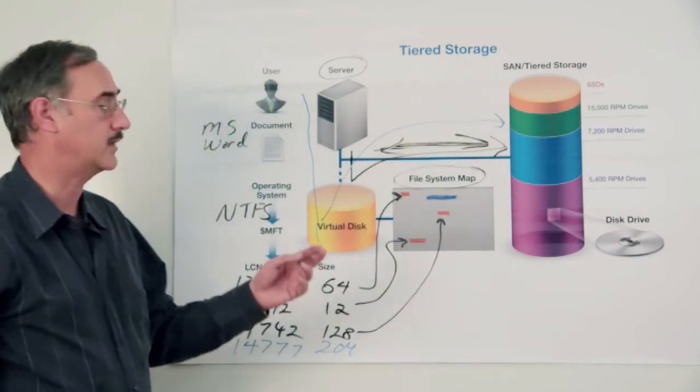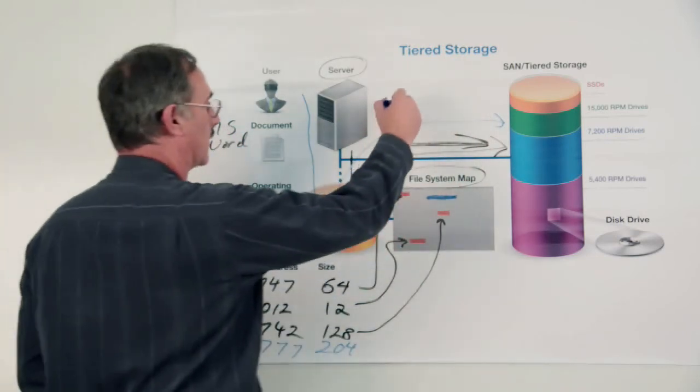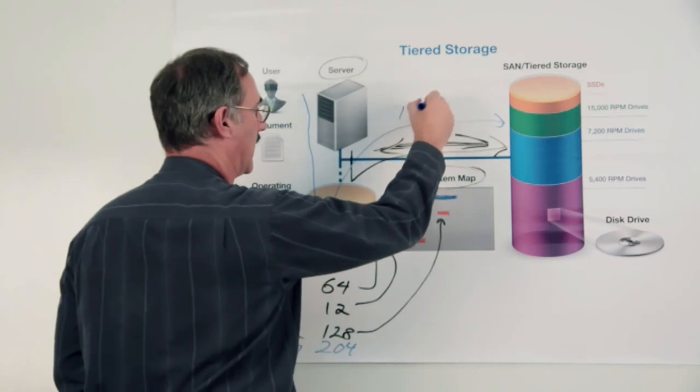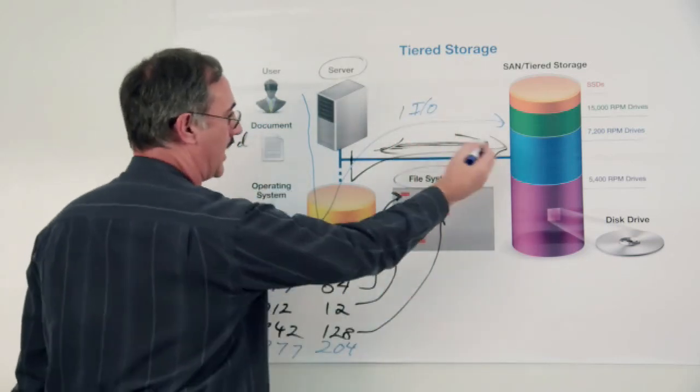So in this particular case where we can map a file into one piece, there would be one I.O. request instead of all of these I.O.s back and forth.